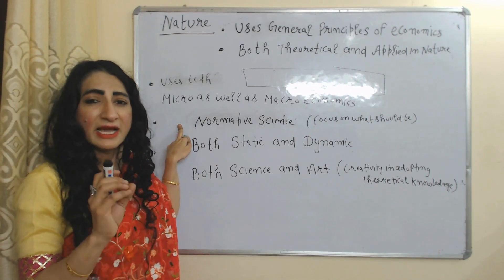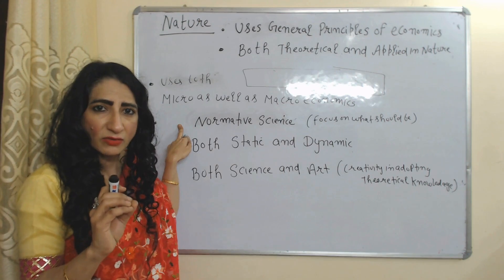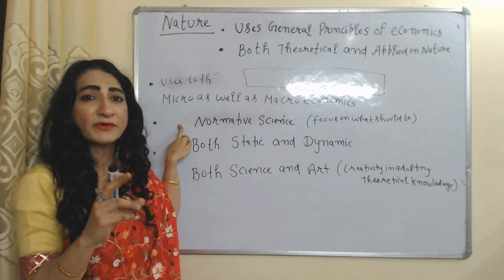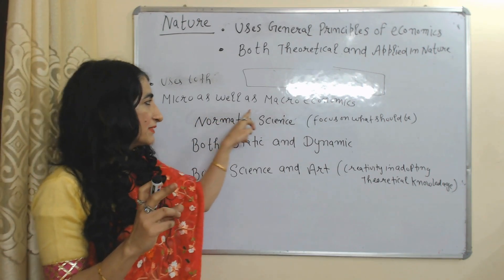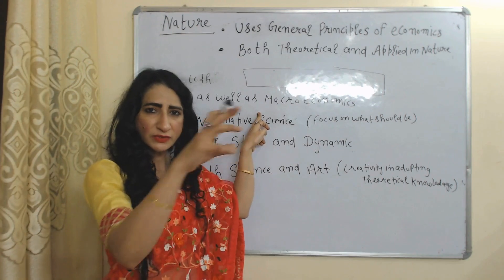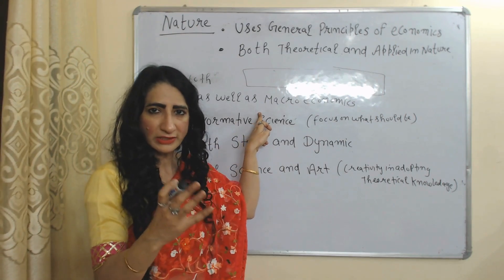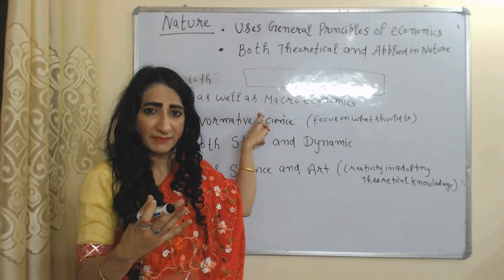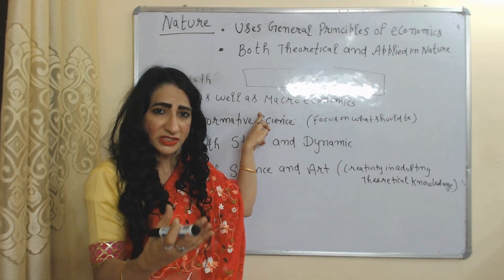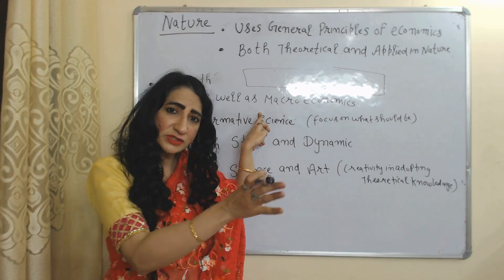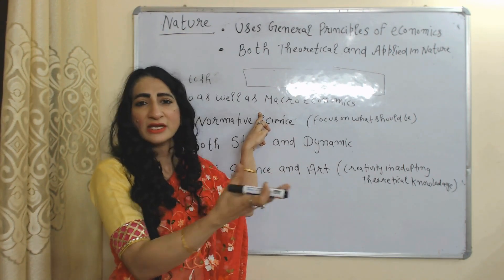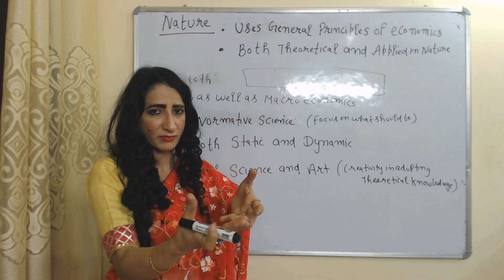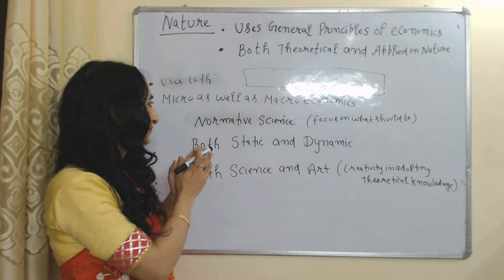Agricultural economics includes both microeconomics and macroeconomics. Micro means studying at the individual level — agricultural economics analyzes the decision-making of individual farmers. Macro means studying at the whole level — agricultural economics describes the relationship of the agriculture sector with the rest of the world.